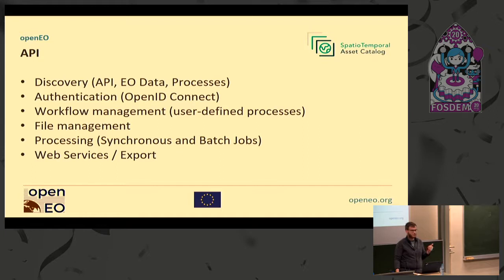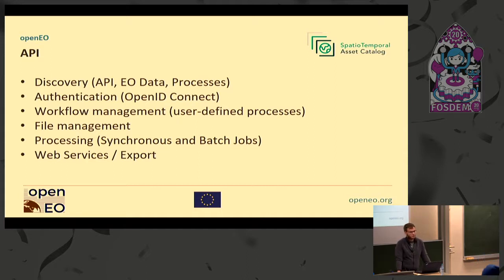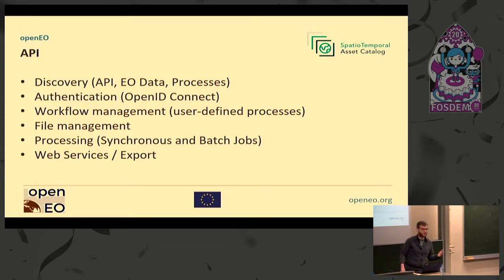Then there is a processing service. You can either process synchronously — so you send things to the server and immediately, or in a matter of seconds, get a response back with a result — though that only works for limited extents and data. For bigger things, you can use batch jobs, where you can send the data to the server, wait for whatever time it needs to process, and then get back the results to be downloaded again as a STAC catalog with the appropriate files in it. A third thing is web services — there is an API to basically host WMS through OpenEO, or WCS, or other services you want to expose. We don't redefine things for viewing but rely on standards already defined mostly from OGC. You can also expose non-standardized things like XYZ tiles used by OpenStreetMap, for example.